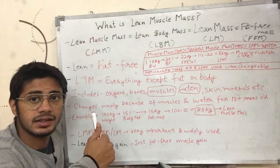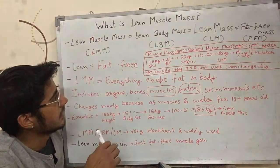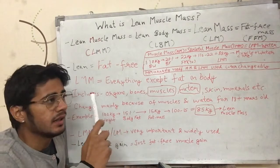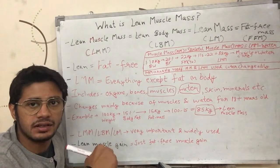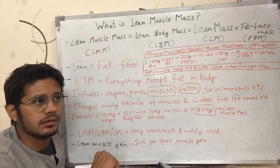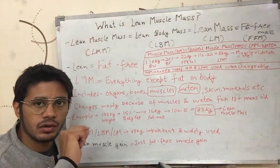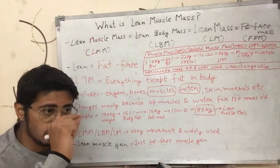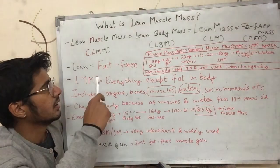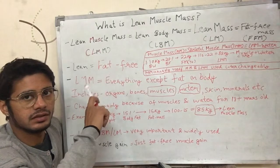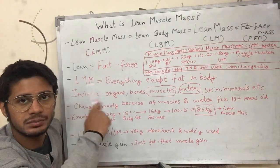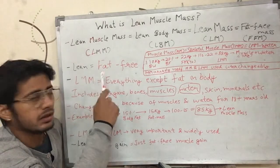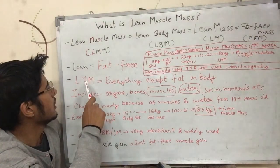Lean means fat free, and mass means weight. Lean muscle mass does not mean fat-free muscle exactly — it does not mean that muscle has a coating or layer of fat over it, so that gaining muscle means gaining a layer of fat along with it. Lean simply means fat free; the term has just been used this way.